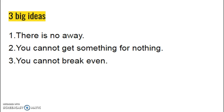The three big ideas: there is no away — you can't throw things away; you can't get something for nothing; and you can't break even. You can't get rid of matter — you can only convert it from one thing to another. You can't get something for nothing — that's our laws of conservation of mass and energy. You've got to spend something to make something. And you can't break even — that's the entropy law that says as we convert things, we lose efficiency. So that's Chapter 2.